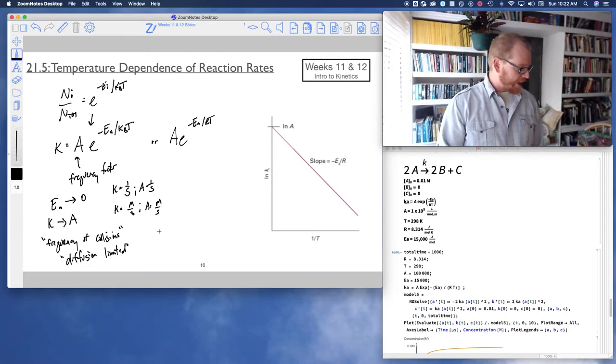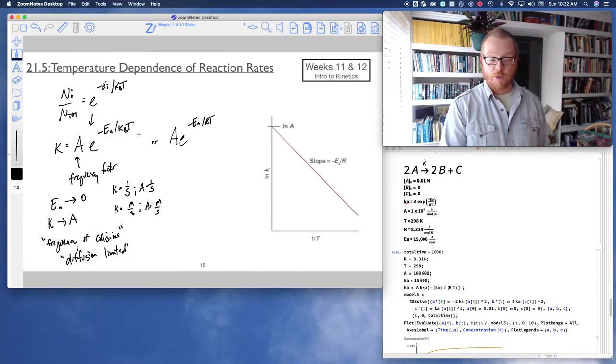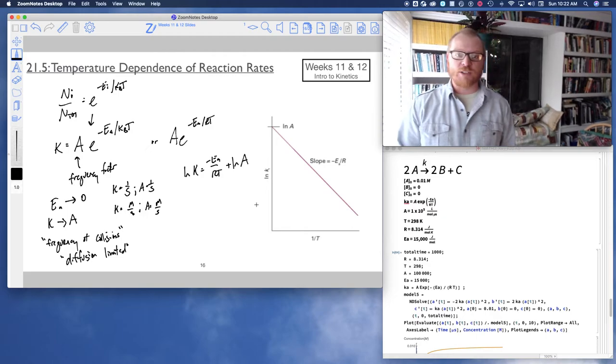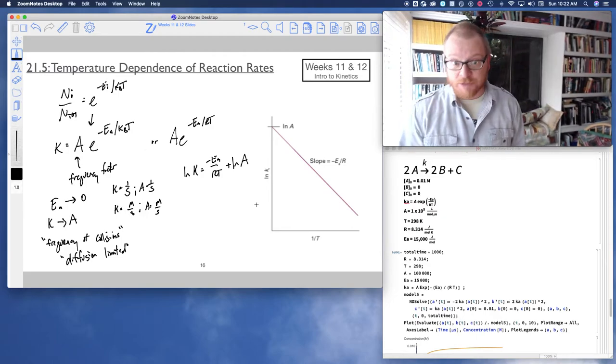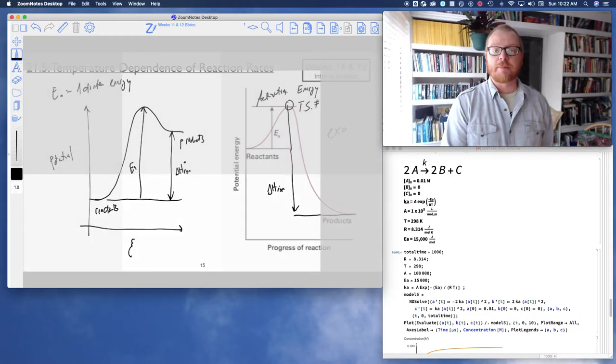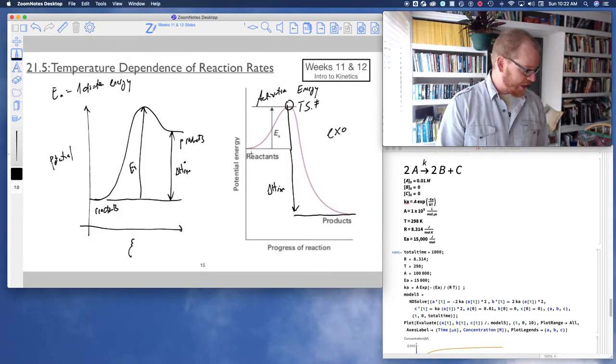And so we also recognize if I rearrange this equation right here—if I take the natural log of both sides, then what I get is the natural log of k equals negative EA divided by RT plus the natural log of A. That's exactly what I've got right here. If I did several different experiments where I change the temperature, which we know will change the rate constant because at different temperatures...